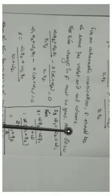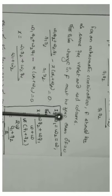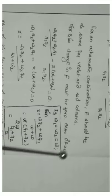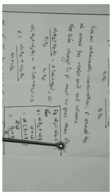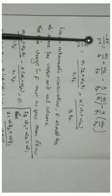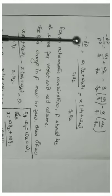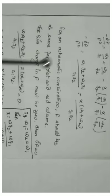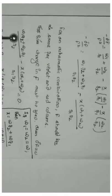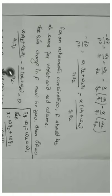For achromatic combination, F should be the same for both violet and red colors, meaning the change in focal length must be zero — that is, ΔF = 0. When ΔF = 0, the left-hand side becomes zero. Setting the expression to zero: (ω1·F2 + ω2·F1)/(F1·F2) − X(ω1 + ω2)/(F1·F2) = 0.